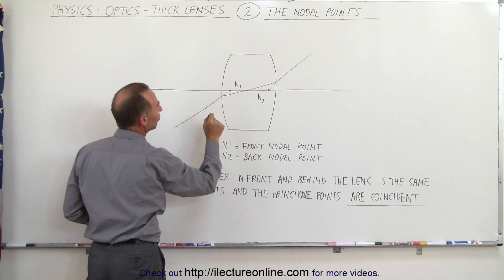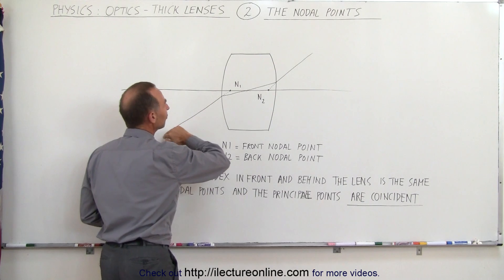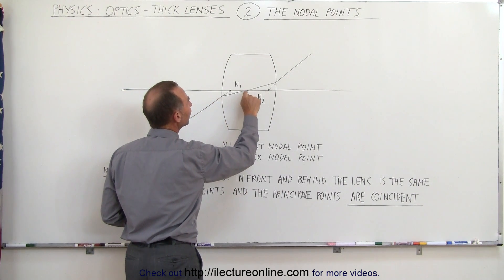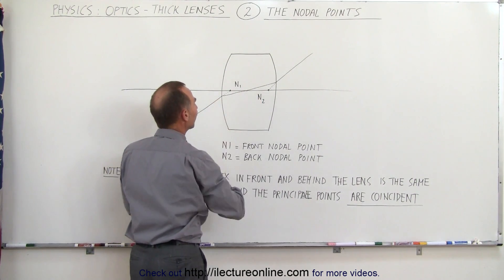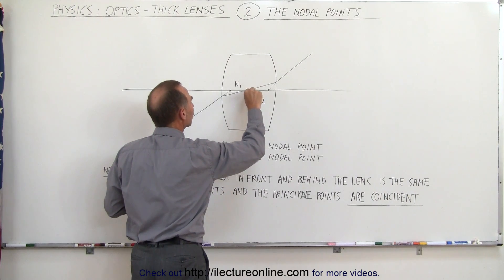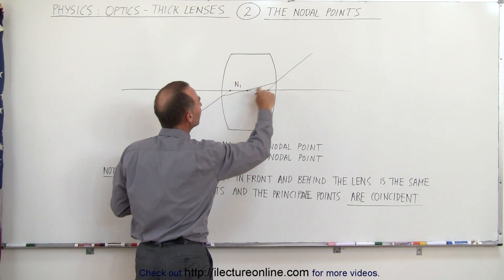But instead, the ray bends or refracts, goes to the center of the lens at the same place where the optical axis goes through right there, and then continues in this direction.